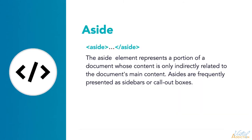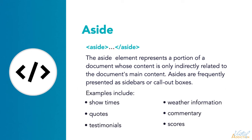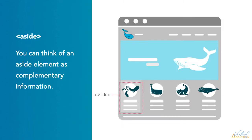An aside is meant to wrap a chunk of related content that is tangentially related to the content in the main outline, but actually not part of it. The information is indirectly related to the document's main content. An example could be a call-out or sidebar in an article — it's nice to know, but it's not essential for understanding the article. You can think of it as complementary information. The spec offers examples like pull quotes and sidebars. Examples might include widgets like showtimes, weather, sports scores, or stocks on a portal page.